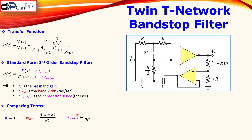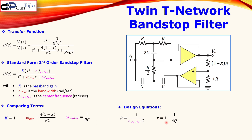Now we have our comparison done and we can develop the design equations. R can be expressed as one over the center frequency in radians per second times C. The parameter x, which appears in the transfer function, is given by the expression: x equals one minus one over (4Q), where Q is the quality factor, which is the ratio of the center frequency to the bandwidth.